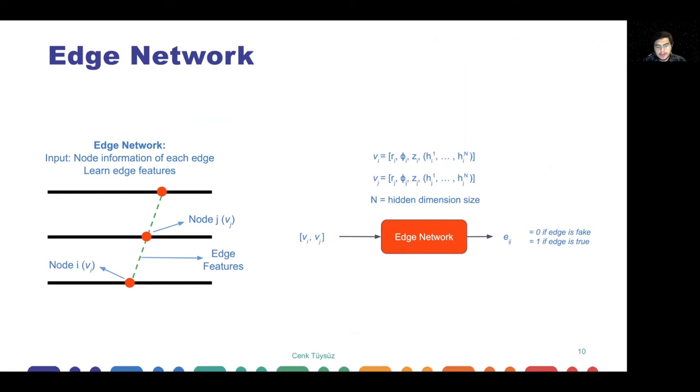So we have the graph now, and we first feed this into an input network. The input network is a simple single layer, fully connected neural network layer that increases the hidden dimension size of our measurement. We call these measurements as hits and also as nodes. A node has three spatial coordinates, R phi z in cylindrical coordinates, and also the hidden dimensions that are encoded with the help of the input network. The edge network takes nodes connected by the graph and processes them with a neural network inside, and gets us an output indicating if the edge is a true edge or a fake edge. Zero is fake, one is true. We get a value between zero and one, and we can put a threshold on this to decide.